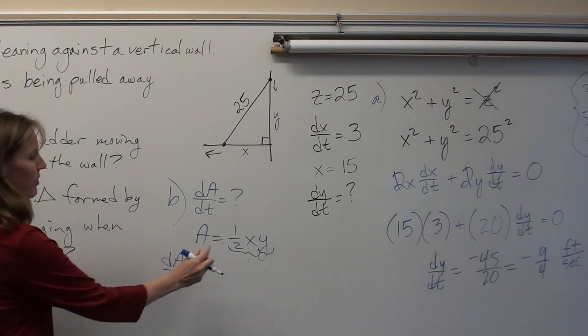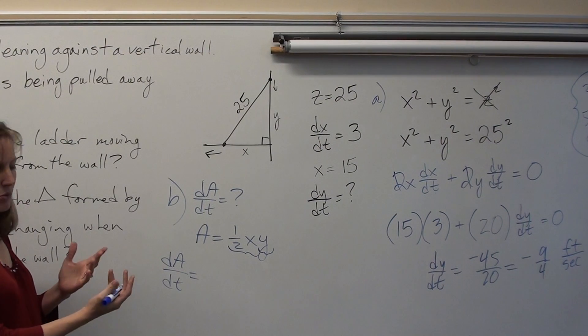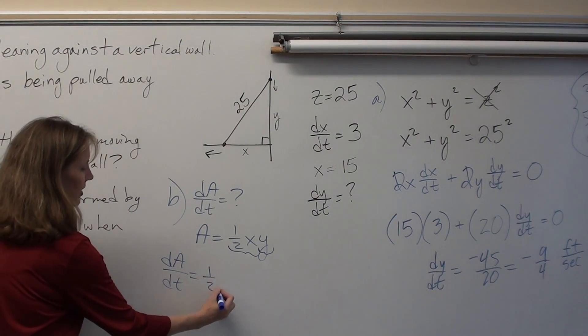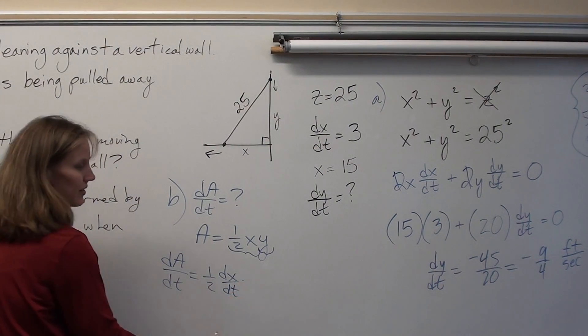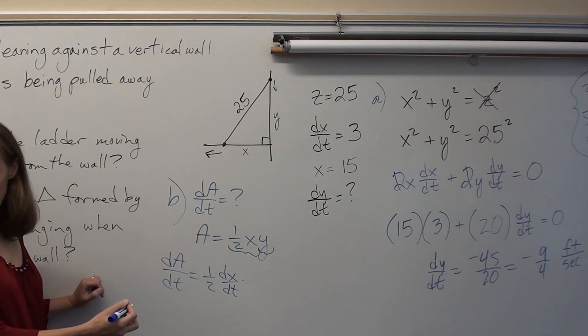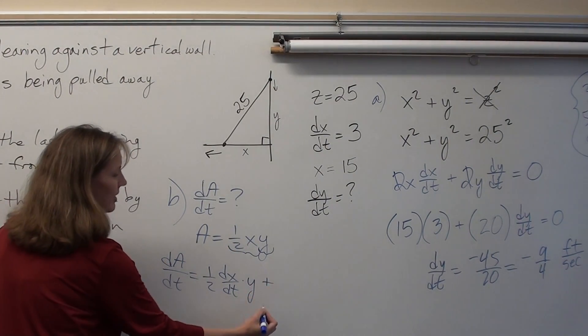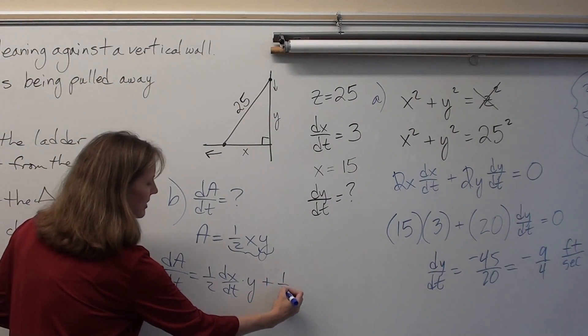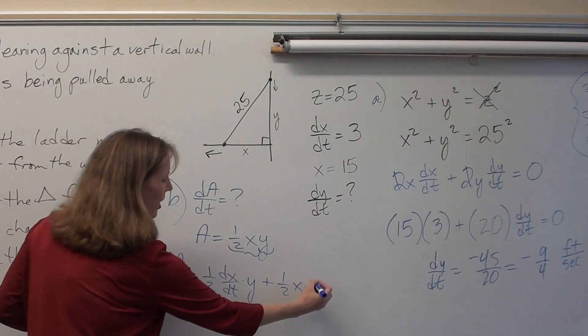So, the derivative of 1/2 x with respect to t is 1/2 dx/dt. That's like your f prime, right? 1/2 dx/dt times y plus 1/2 x times the derivative of y with respect to t, dy/dt.